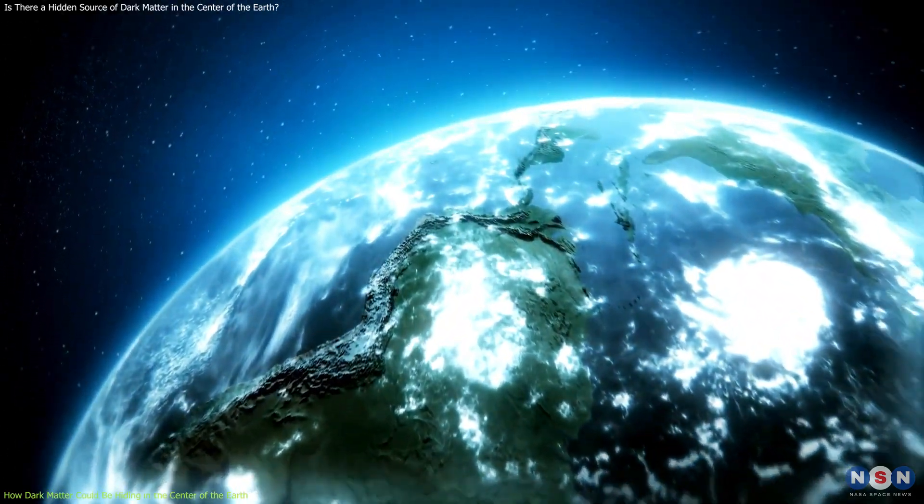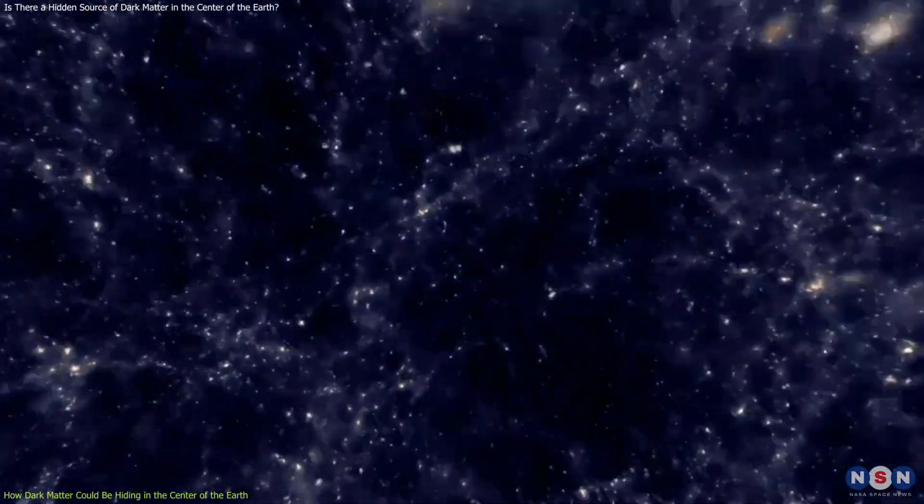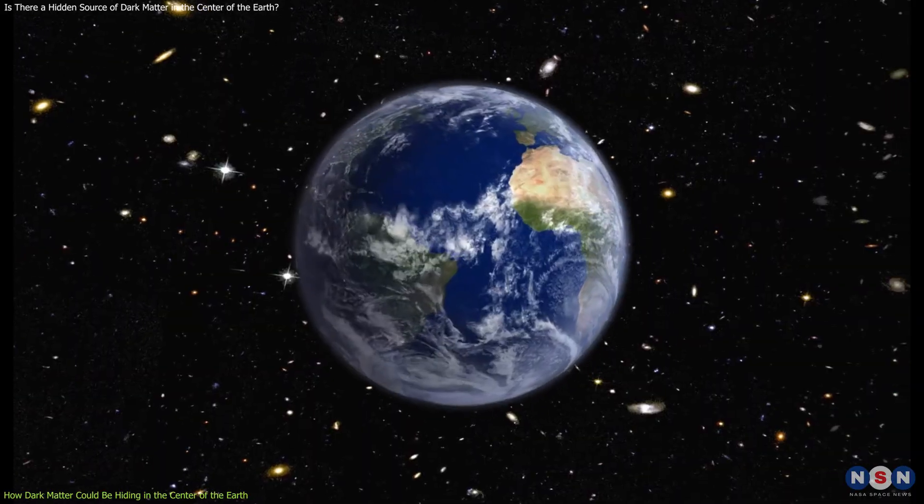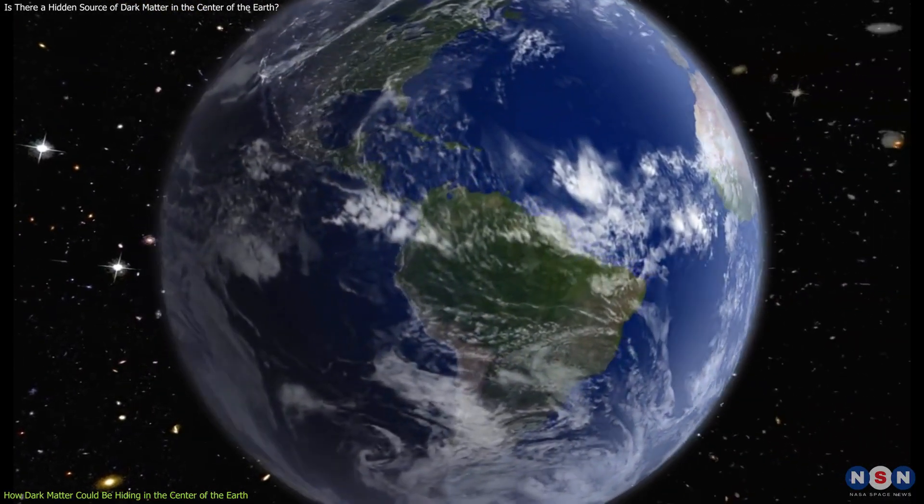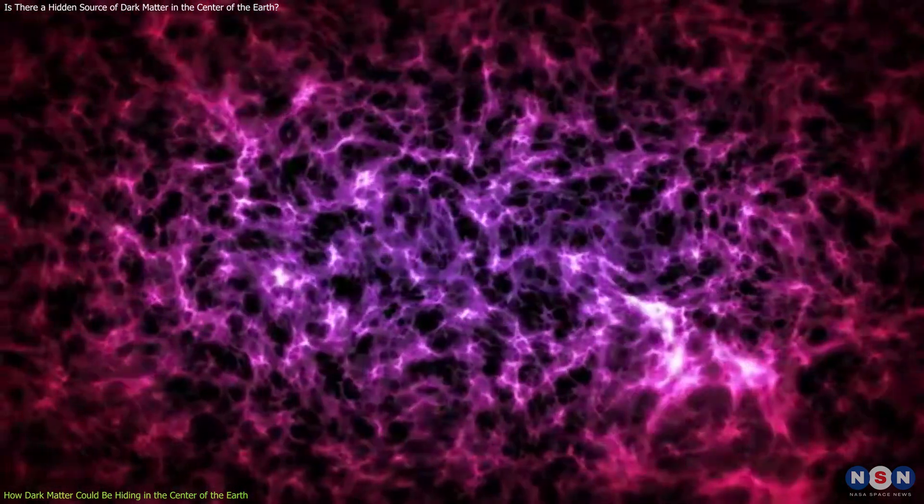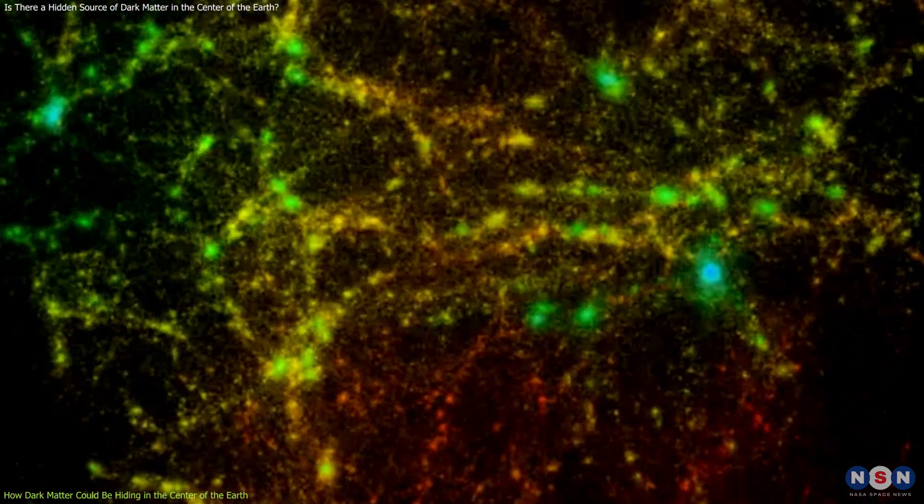Yes, you heard me right. The center of the earth. How can there be dark matter in the center of our planet? Well, it turns out that dark matter particles can be captured by the earth's gravity as they pass through it. Over billions of years, some of these particles could accumulate in the center of the earth, where they would be densely packed and have a higher chance of colliding with each other.